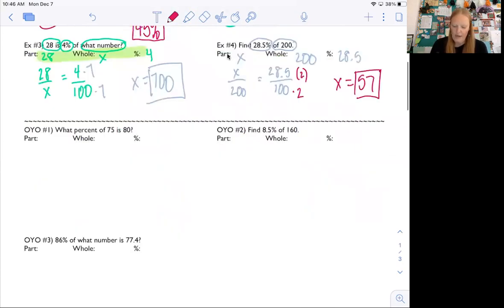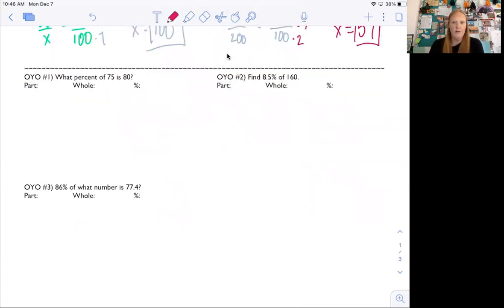So I would like you to try the three that are here. Because they're all going to be different. So identify those pieces, set them up, solve, and then decide if your answer is a number or a percent. Because you don't want to give a number answer if it's asking for a percent and you don't want to give a percent answer if it's asking for a number. So hit pause, try those three problems. See you in a minute.